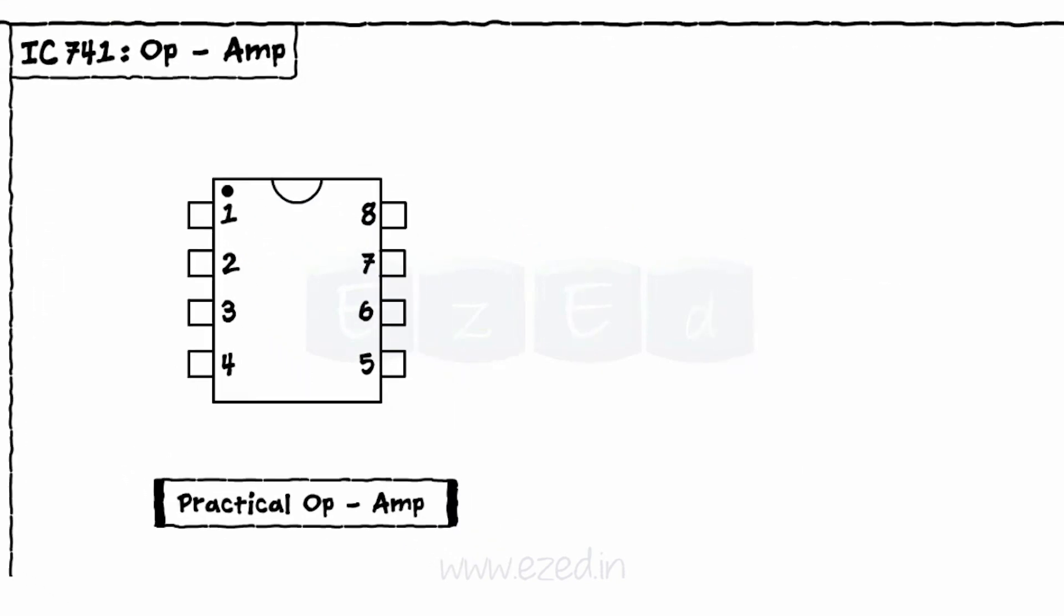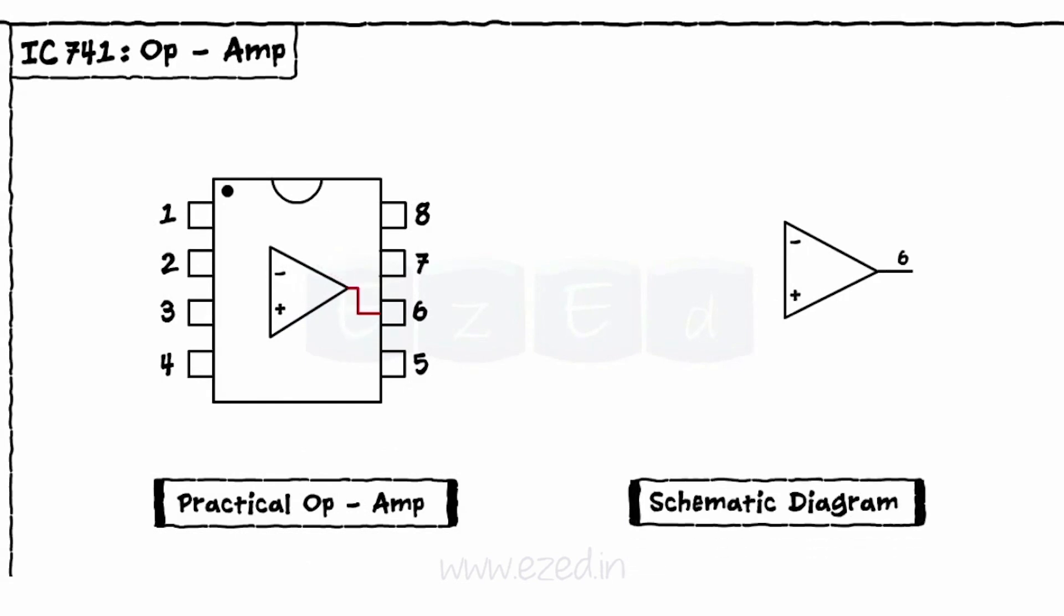This op amp is represented as a triangular structure with all 7 pins as shown. Pin number 6 is for output. This IC needs 2 power supplies as positive and negative, which is given at pin numbers 7 and pin number 4 respectively.